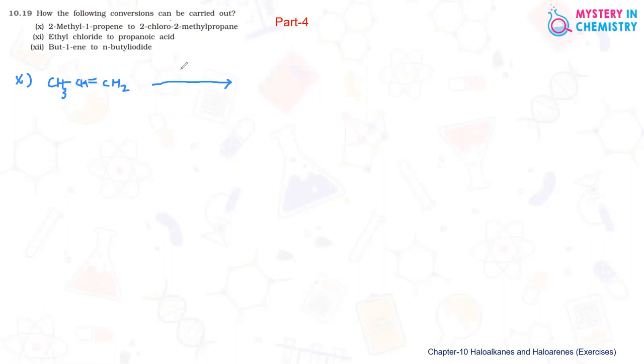This is a one-step reaction: addition of HCl at the double bond according to Markovnikov's rule. The reaction takes place in the presence of HCl. The negative incoming group will go to the carbon atom where hydrogen is less, so chlorine comes here.